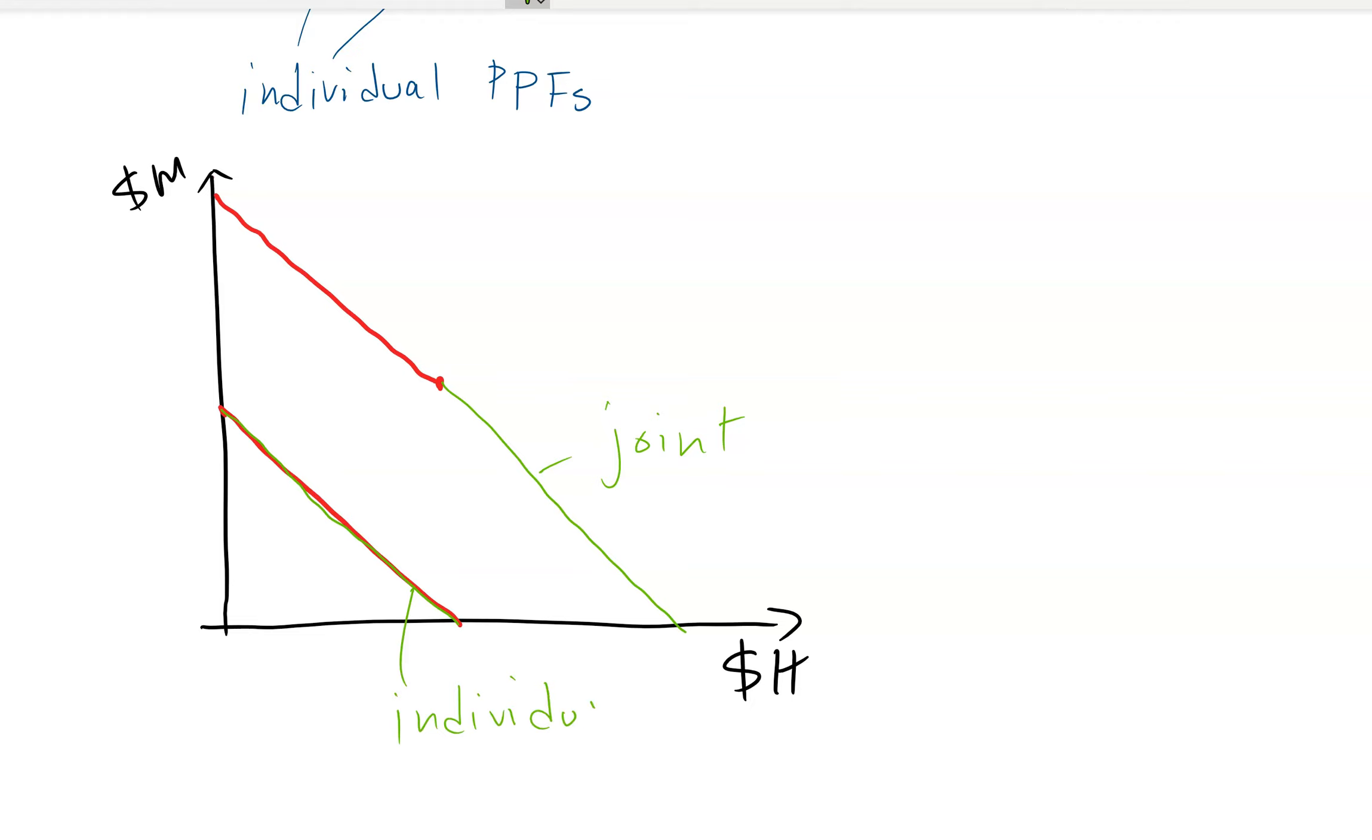So in this case, when we cut the joint in half, it's going to look exactly like the individual, so there's no production gain without difference, and their productive abilities, their opportunity costs.